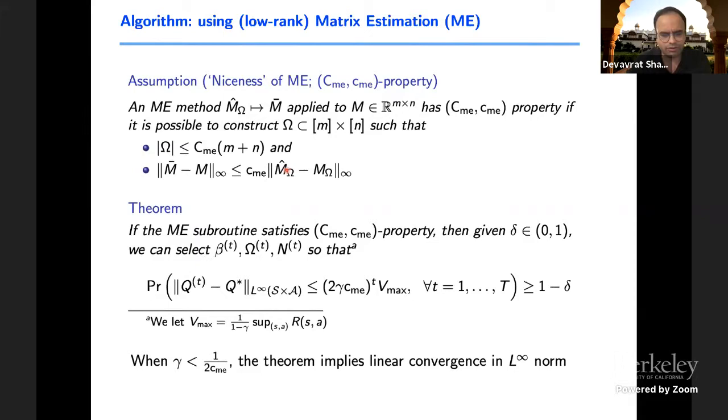If you have access to such an oracle of matrix estimation, which we'll call as satisfying capital C small c matrix estimation property, then we can for choices of quantization number of samples and the iteration at each step to construct that exploration, come up with a method that allows us to produce estimation of Q star at t iteration with respect to infinity norm that decays exponentially with this constant. Now, when I'm saying it decays, I'm assuming that this is true. So this is where when I stated overview of the result, I said gamma should be less than some universal constant.